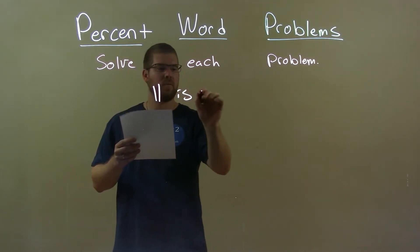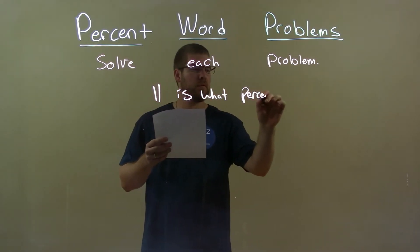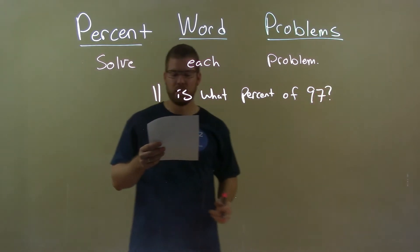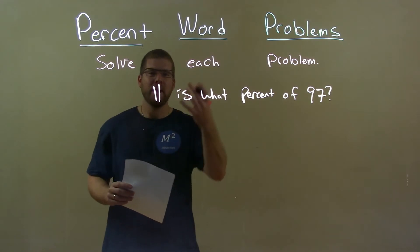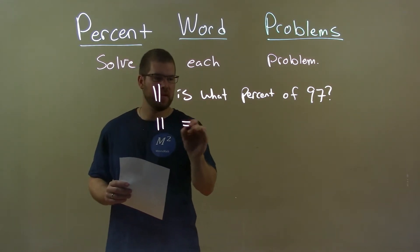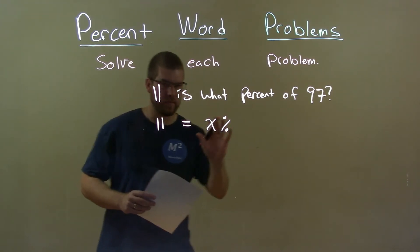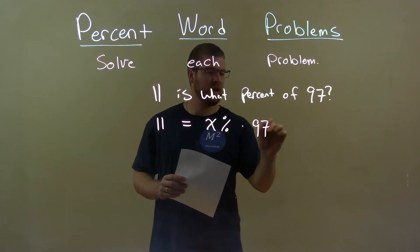So if I was given this problem, 11 is what percent of 97? Let's write this as an equation. 11 equals what percent x percent, that's what we're looking for. I think it's a percent of multiplication 97.